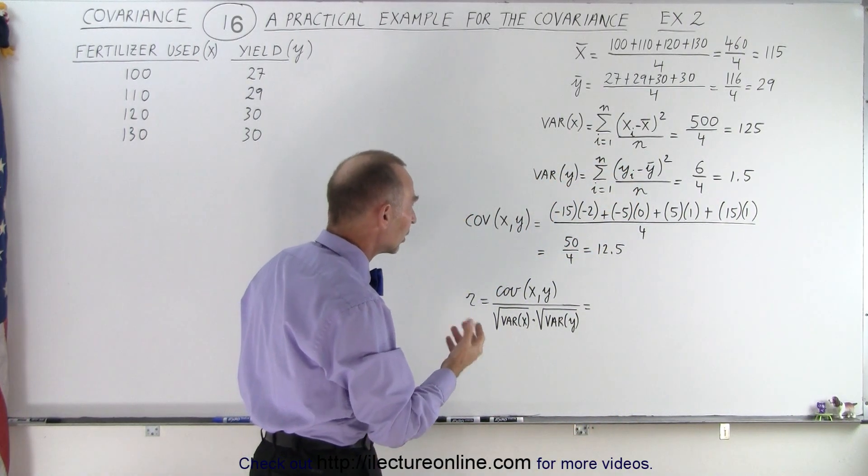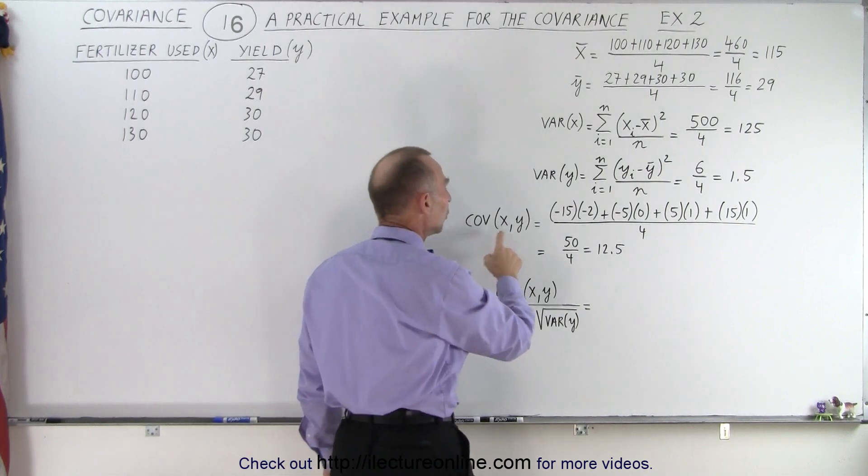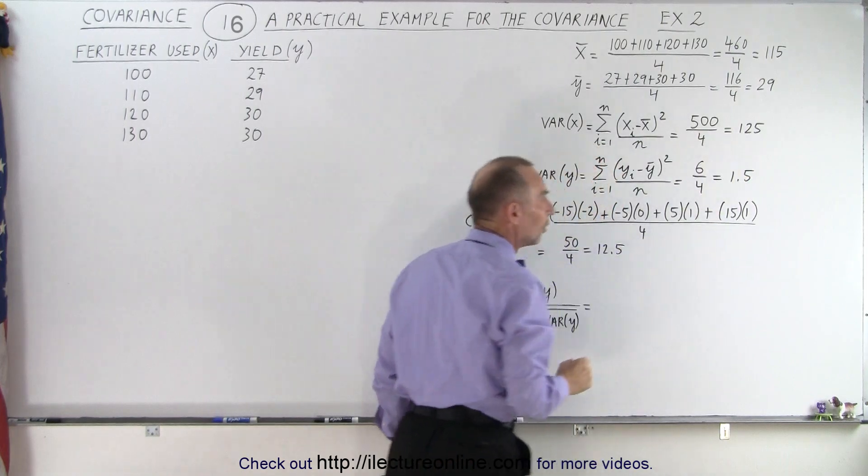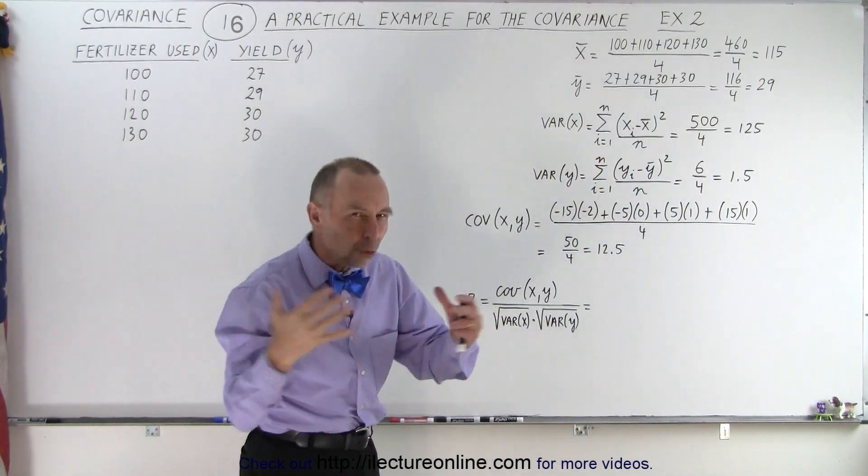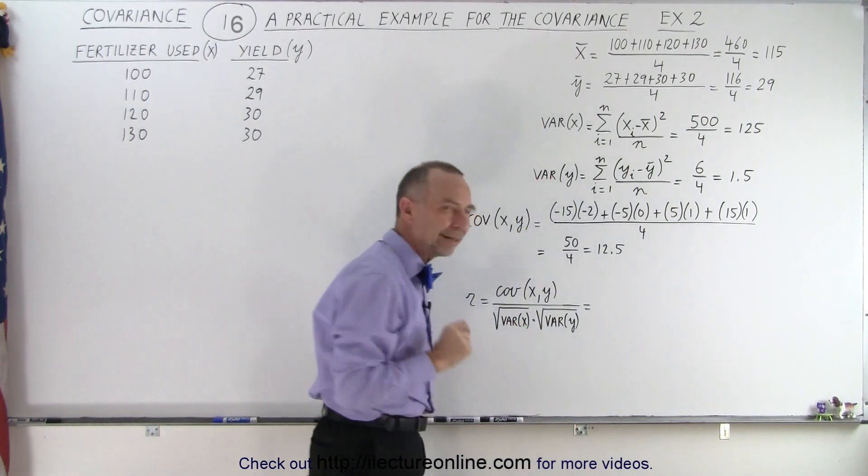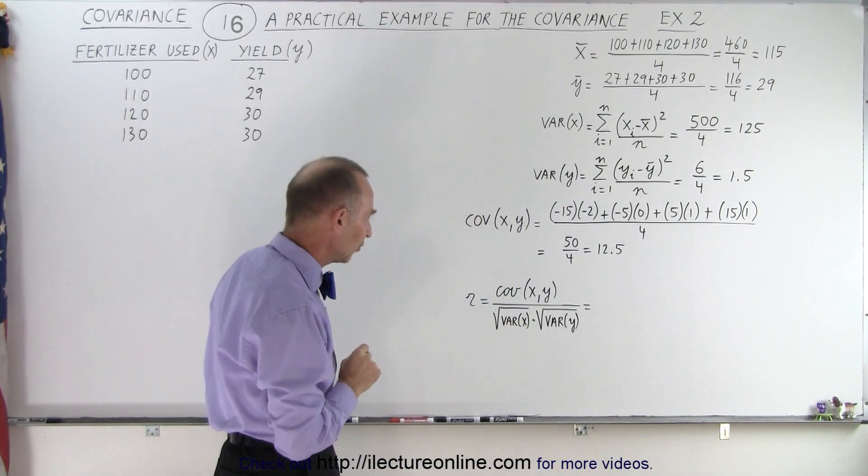We're also going to calculate the covariance, and notice that the covariance is also relatively small relative to the variance in X. So X changes a lot, but the covariance is a smaller number. However, is that significant? We'll find out in just a moment.